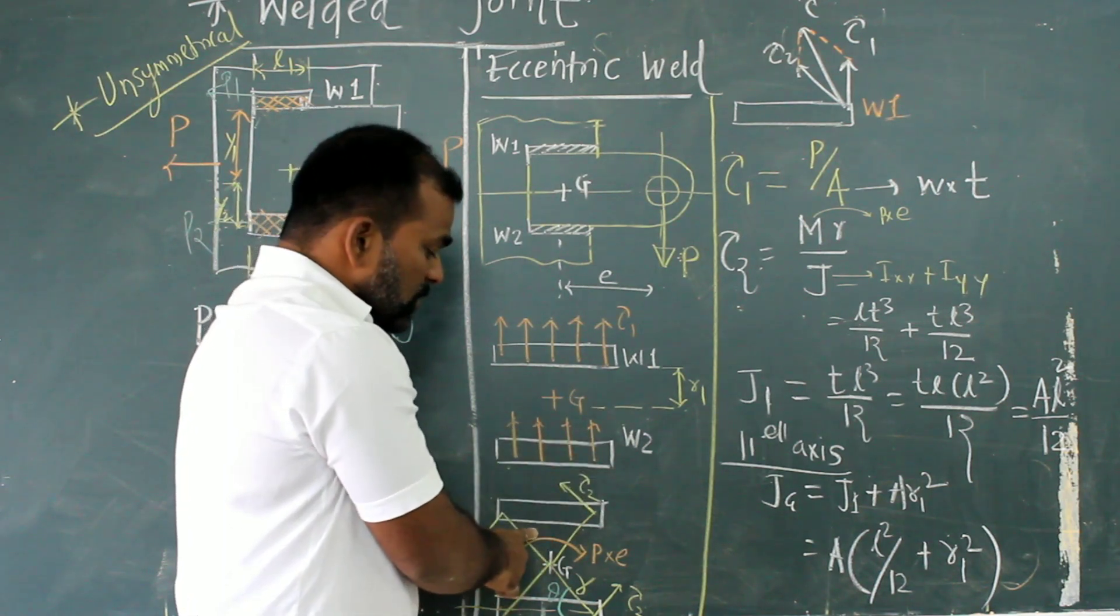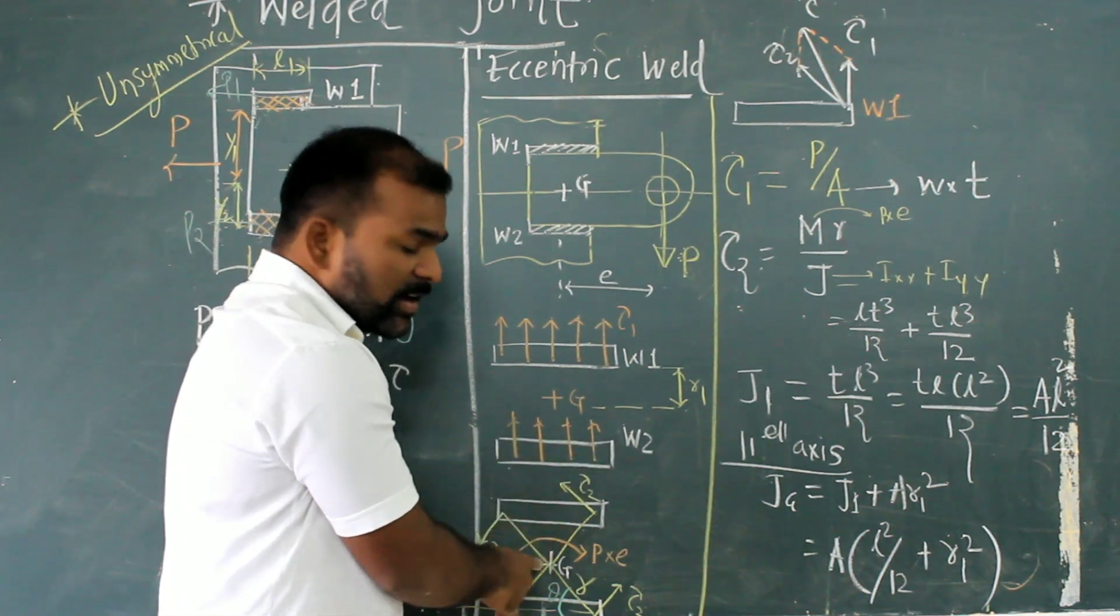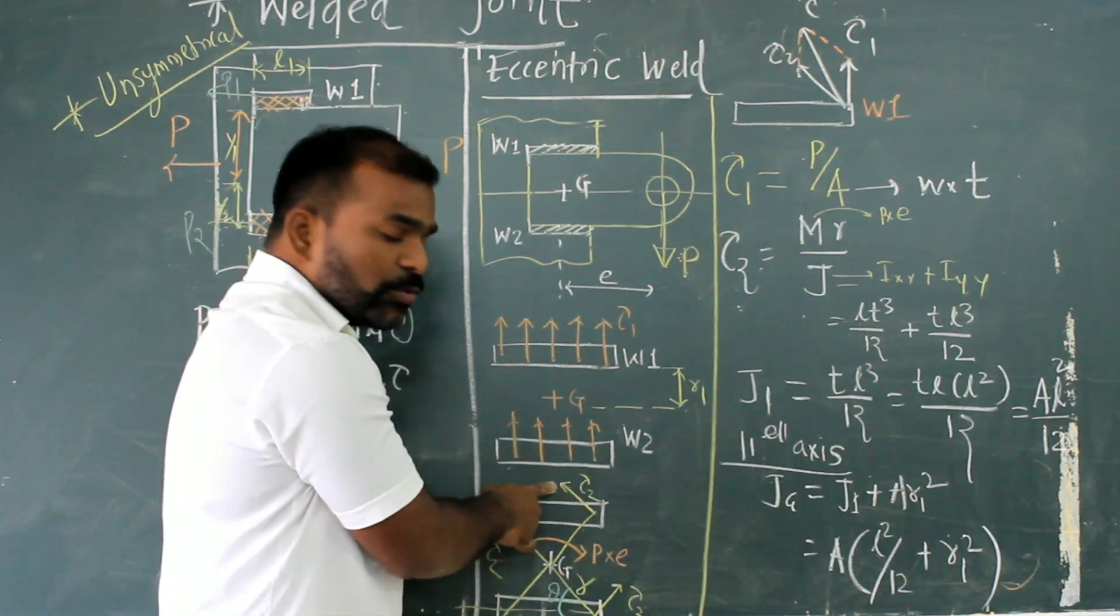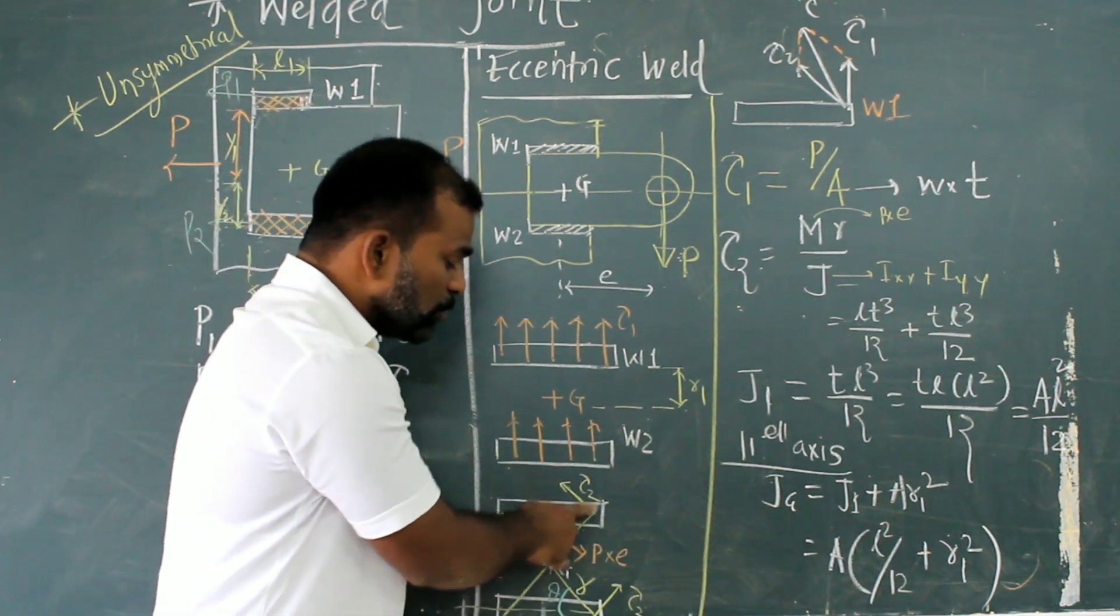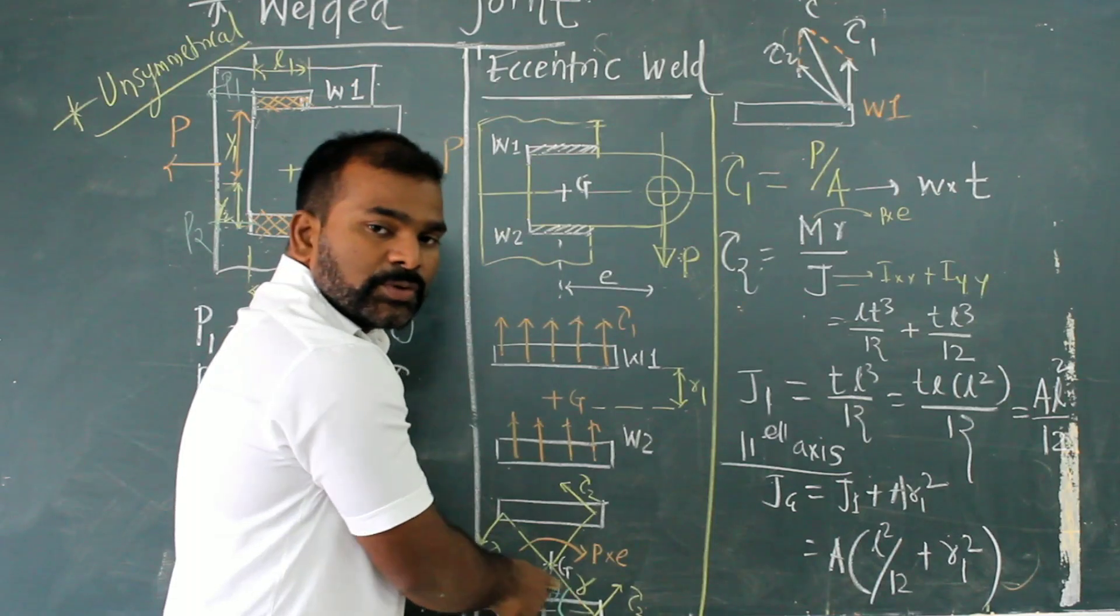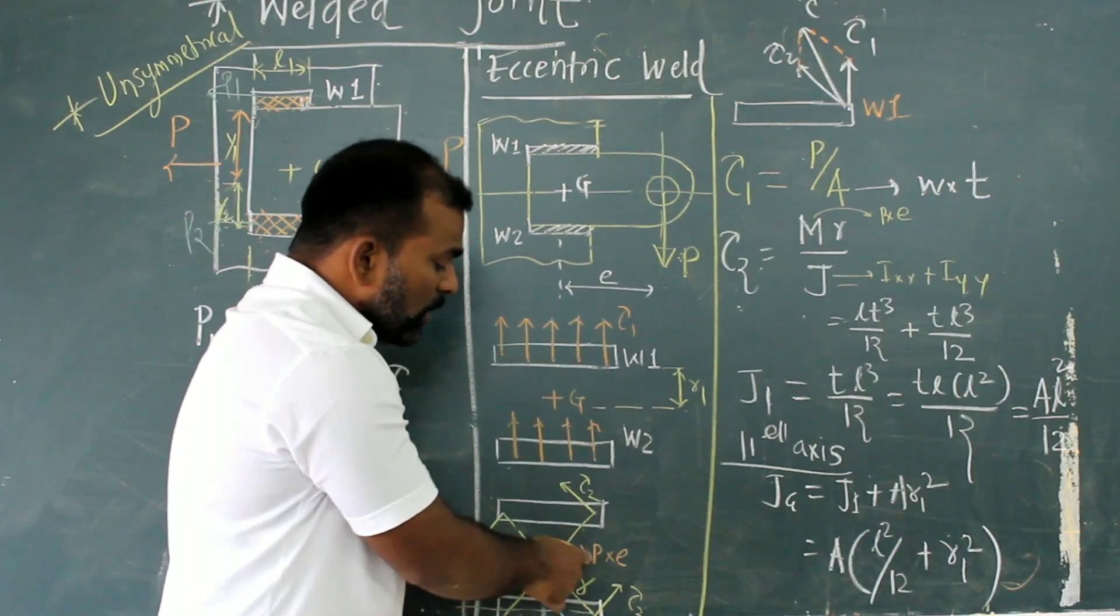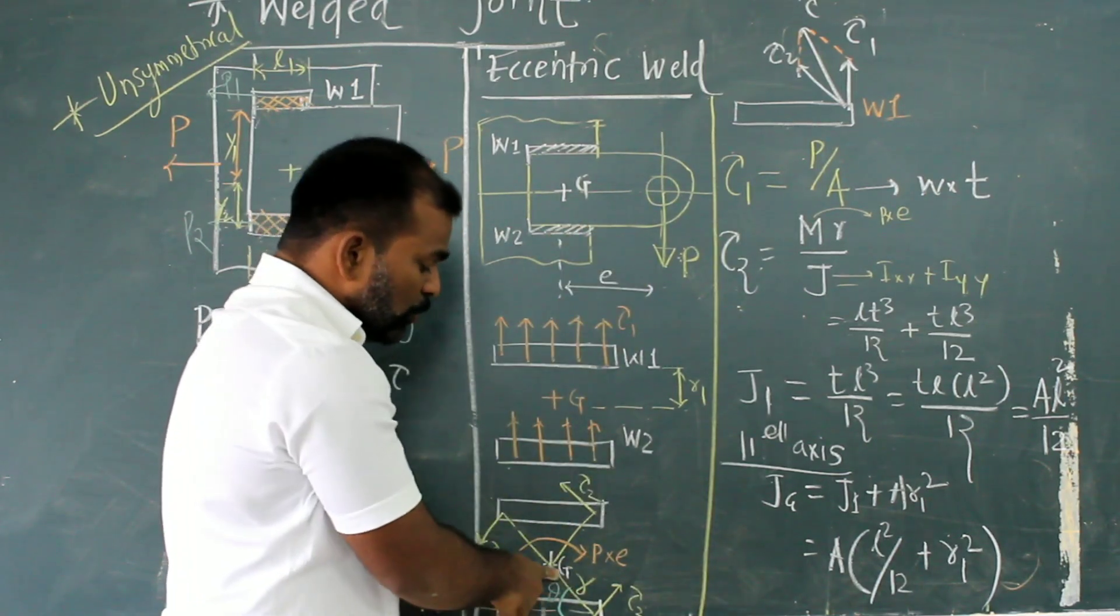Now, secondary force is again perpendicular to the radius, which I told you, that is tau 2, perpendicular to the radius. Radius is nothing but distance between CG with respect to weld. So this is the radius and moment is P into E. That will be the moment.